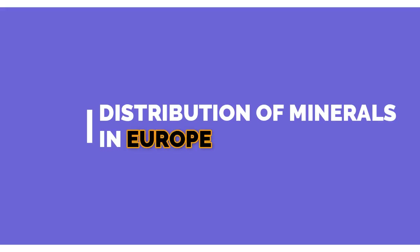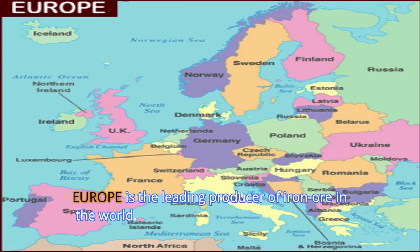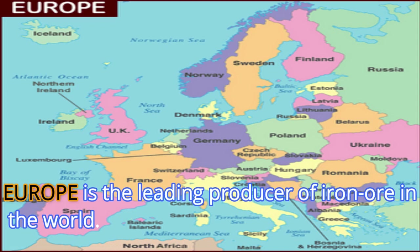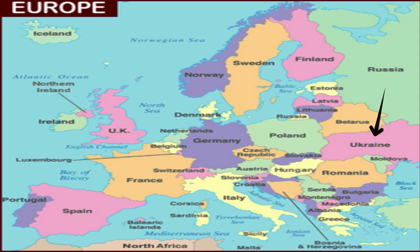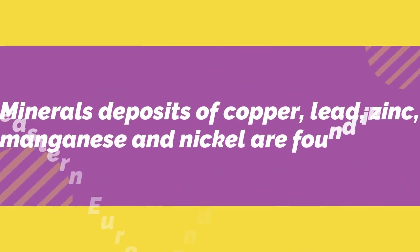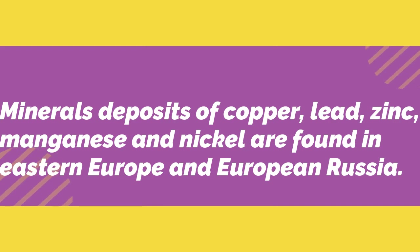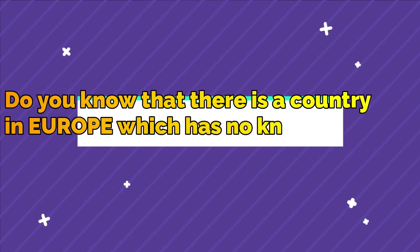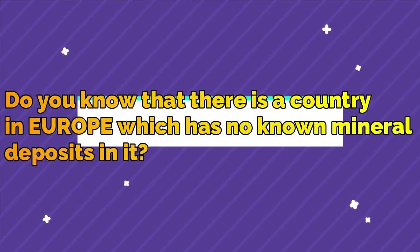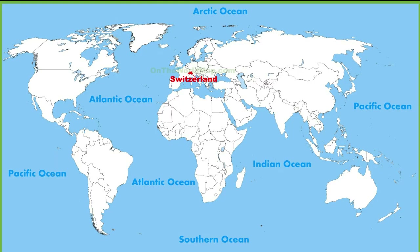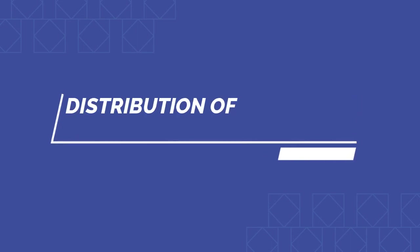Now let us know about the distribution of minerals in Europe. Europe is the leading producer of iron ore in the world. Russia, Ukraine, Sweden, and France have large deposits of iron ore. Apart from iron ore, other minerals — copper, lead, zinc, manganese, and nickel — are found in large amounts in Eastern Europe and European Russia. Interestingly, Switzerland is a country in Europe which has no known mineral deposits in it.